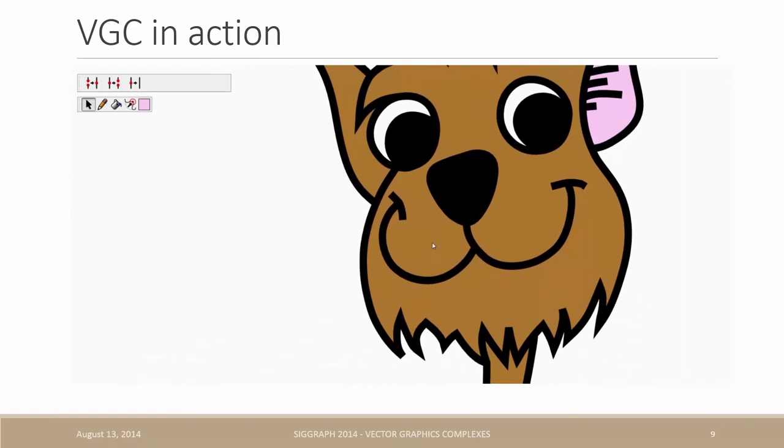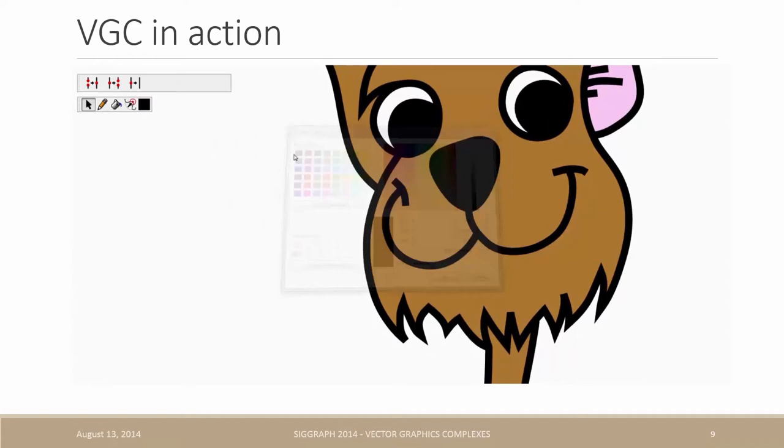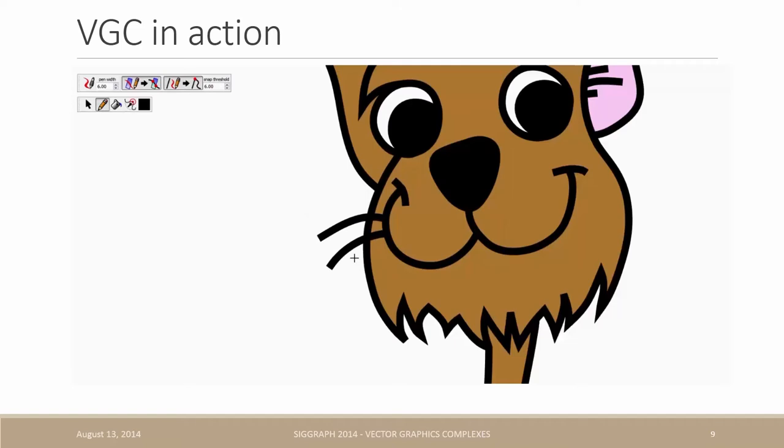So now, let's try to draw the whiskers in the same fashion. So first, I choose a black color and then I select the sketching tool and I naively draw the three whiskers. Unfortunately, we can see that it behave like planar maps and therefore unwanted faces have been created. So let's undo this since it's not what I want.